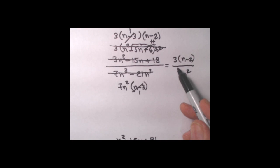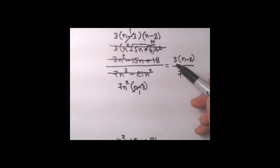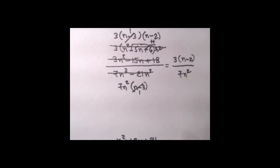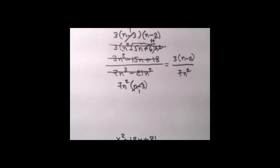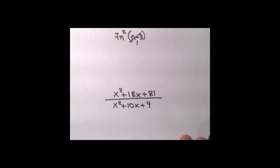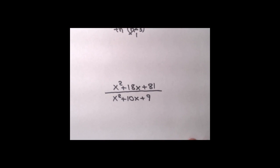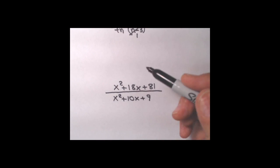I like to leave the answer in factored form — 3 times the quantity n minus 2 over 7n squared — because then you can clearly see there's nothing more to reduce. Many people will distribute the 3 back in to get 3n minus 6 over 7n squared, and you can do that also. Hopefully you're getting the idea and you see the important role that factoring plays in all of this.